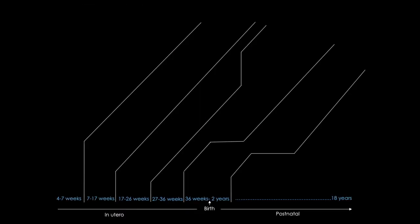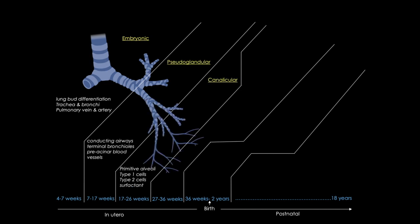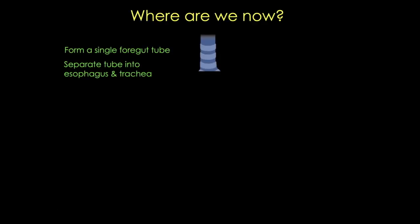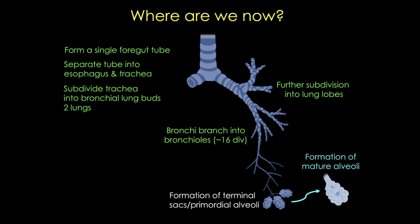Lung development can be divided into five morphological stages. You may see slight differences in the time frames for each stage depending on your source, due in part to the fact that lung development is not completely synchronous. So far, we've completed the embryonic and pseudoglandular stages, and we are partway into the canalicular stage. We've formed the trachea, two lungs, five lobes, and numerous segments, as well as the pleura and the pleural cavity. Now we need to form more respiratory bronchioles, form terminal sacs and primordial alveoli, and then mature those primordial alveoli into mature alveoli capable of gas exchange.